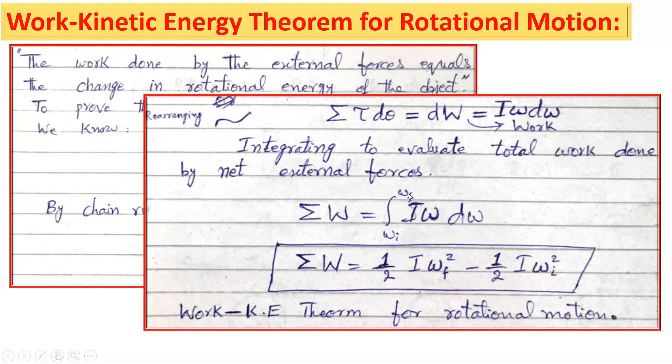Integral from omega i to omega f of I omega d omega. Summation W is equal to one-half I omega f squared minus one-half I omega i squared. This is the work kinetic energy theorem for the rotational motion.